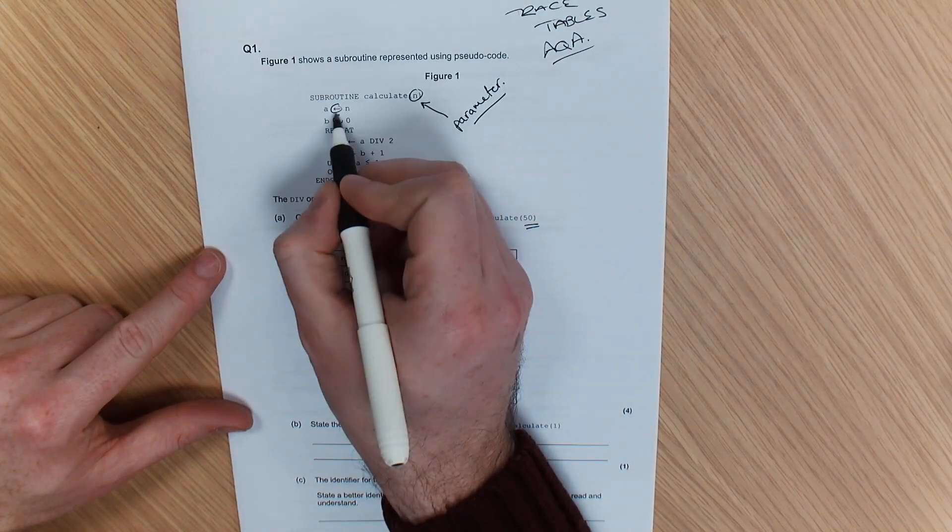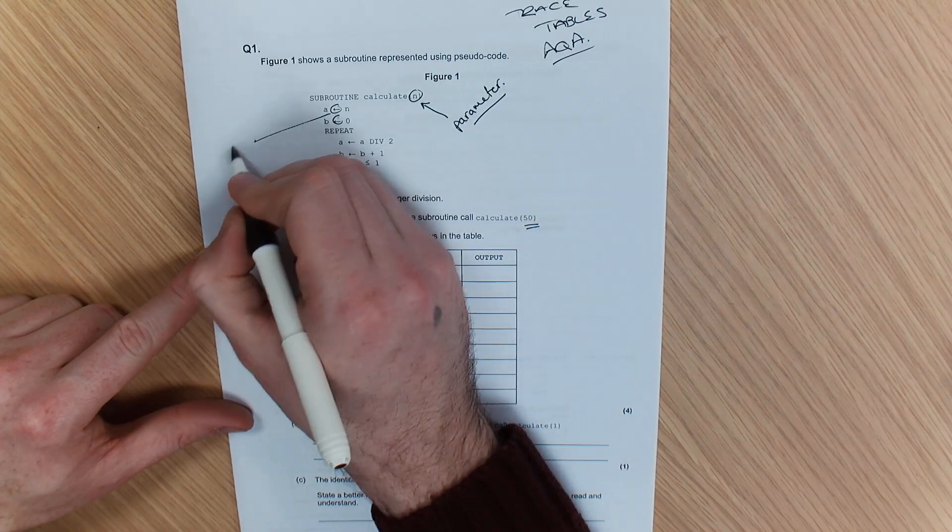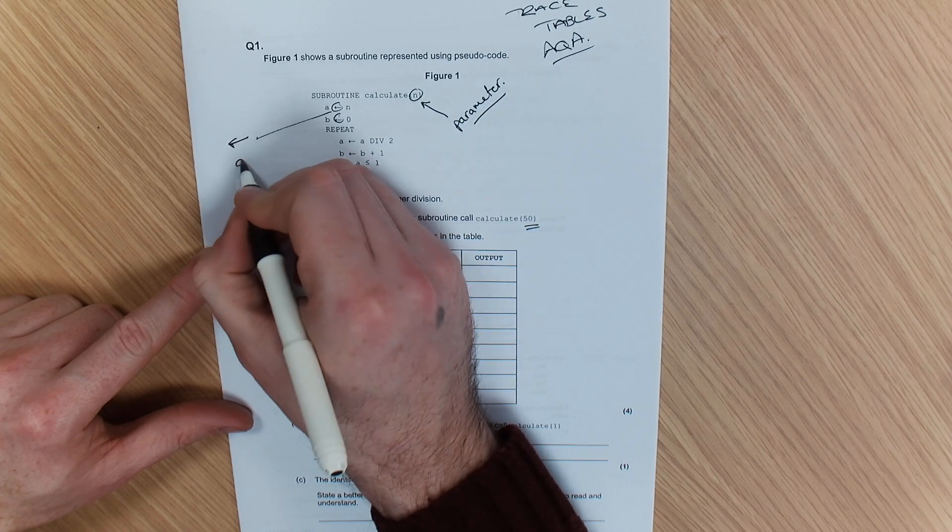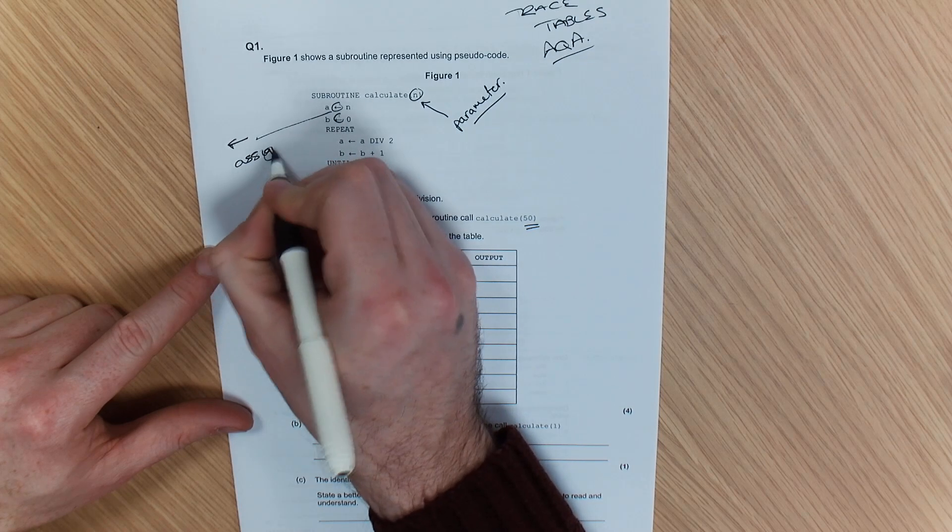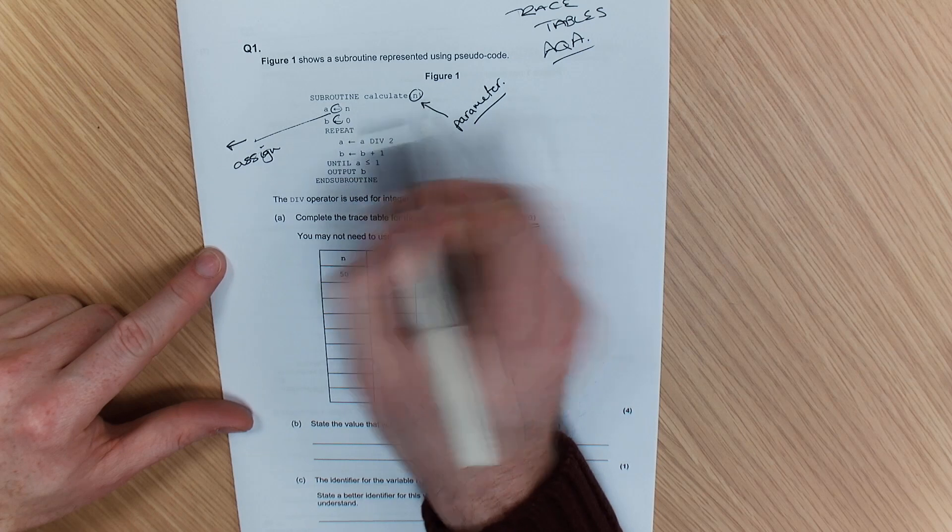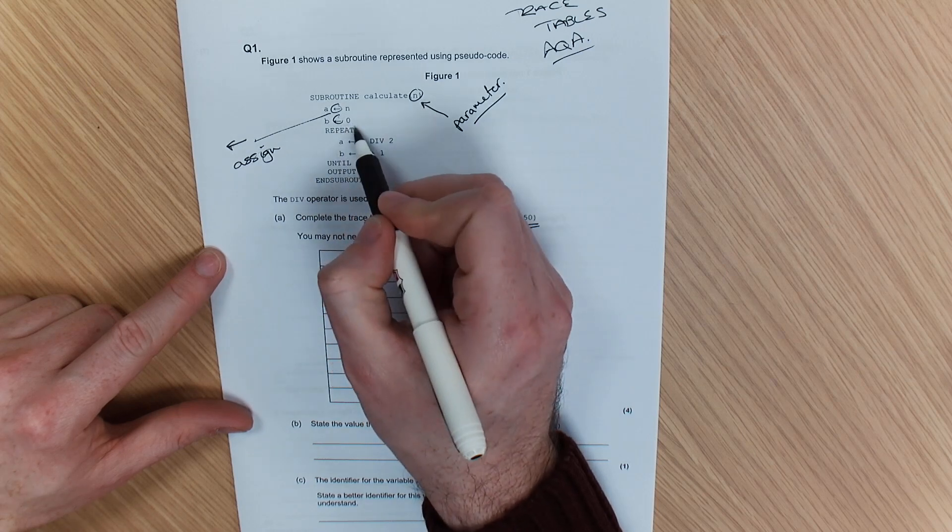A to N, this is an assignment. Wherever you see this arrow, it means assign. The variable has been assigned the value N. B has been assigned the value 0.